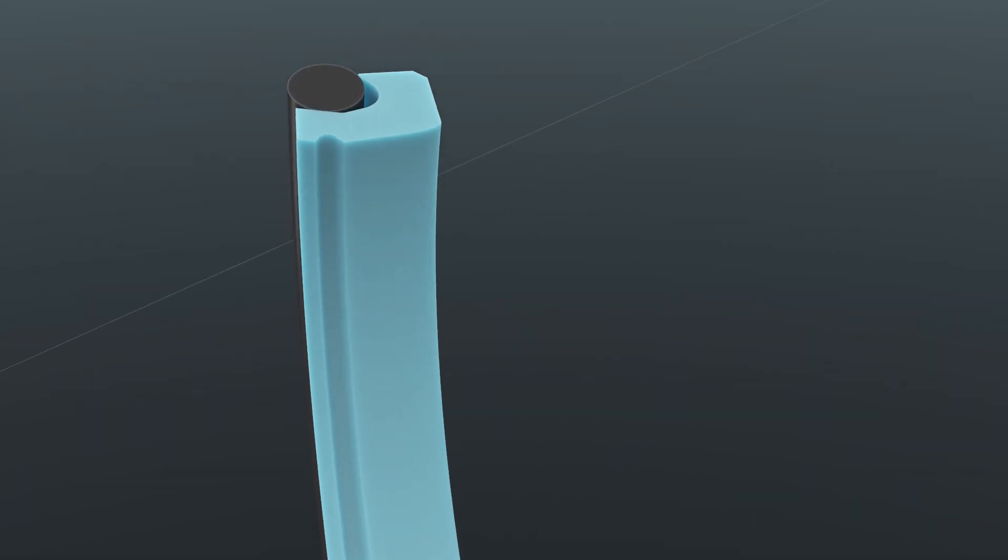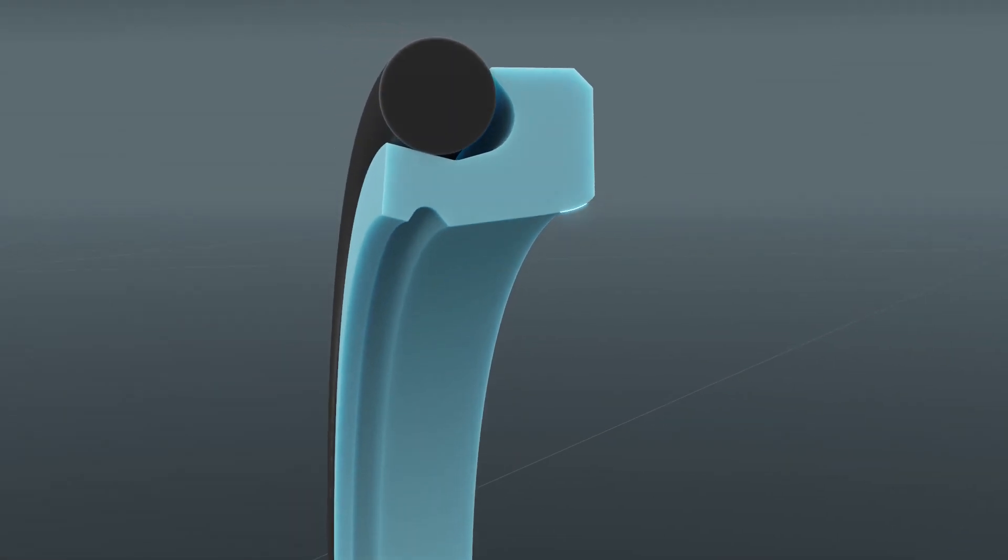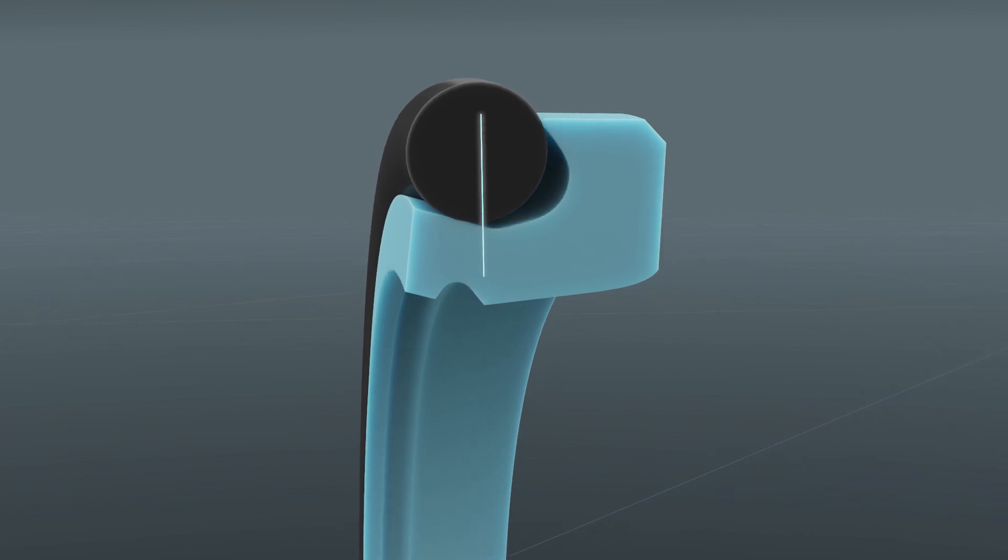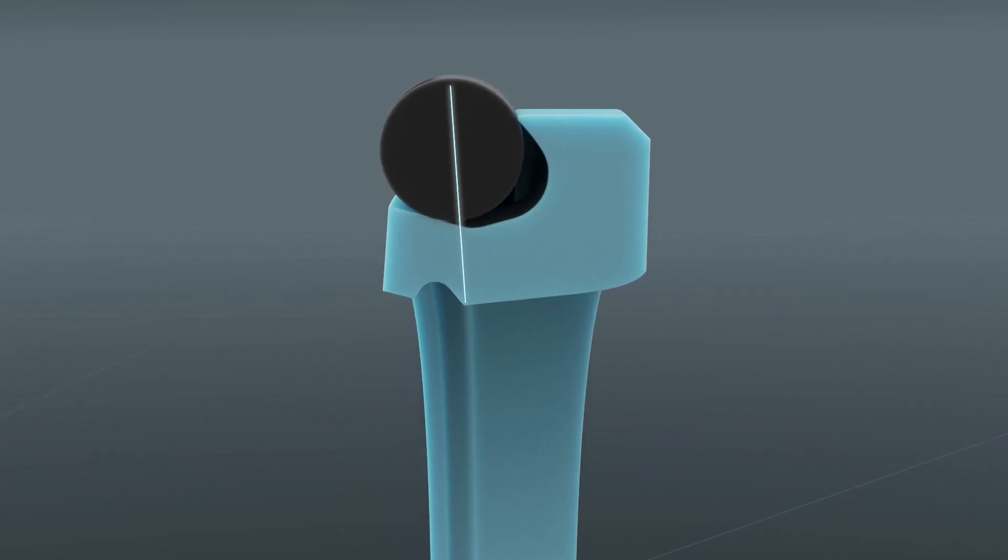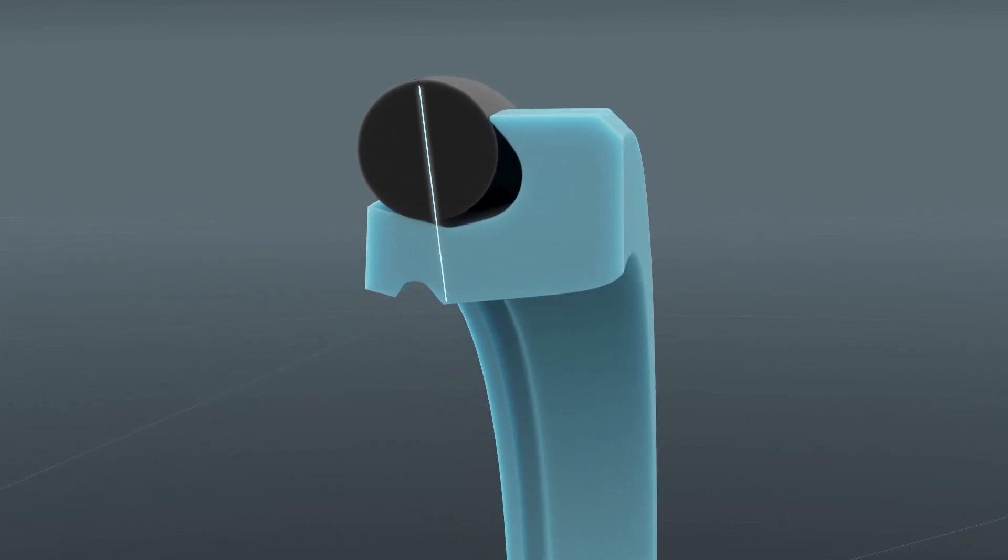The seal's FEA-optimized shape eliminates extrusion risk and aligns the sealing lip with the O-ring for additional stability and support, guaranteeing peak performance.